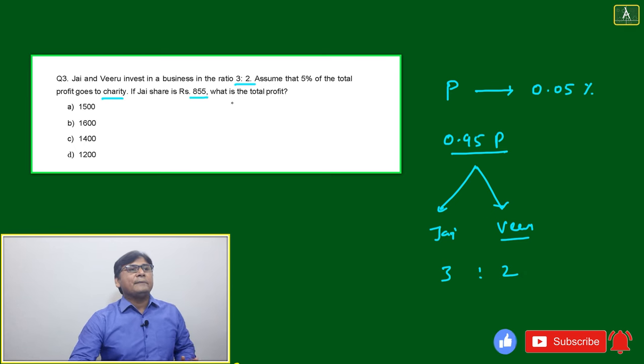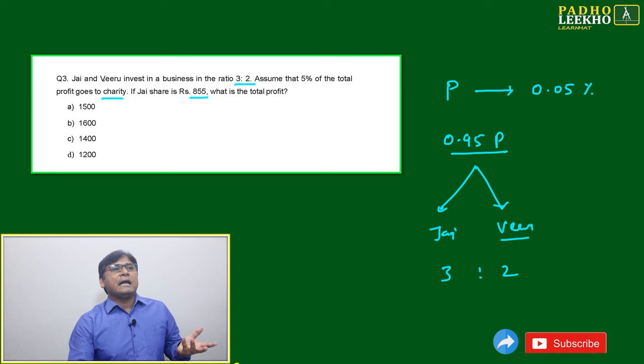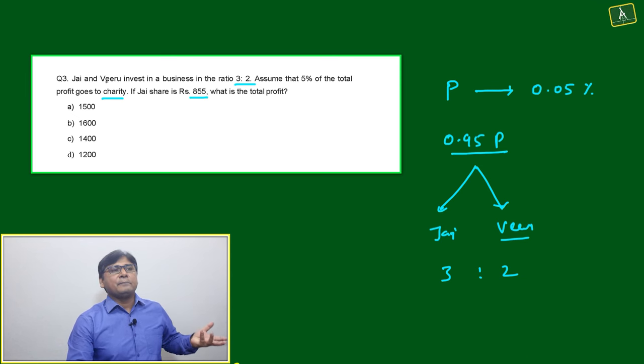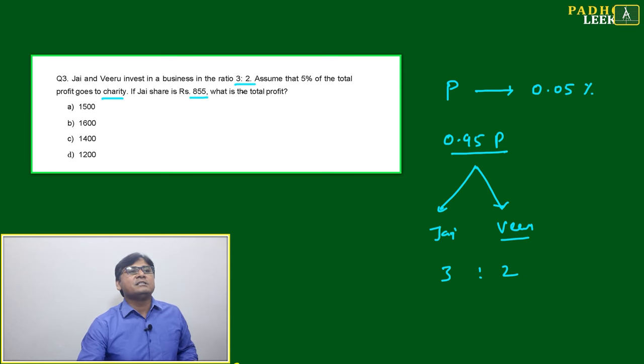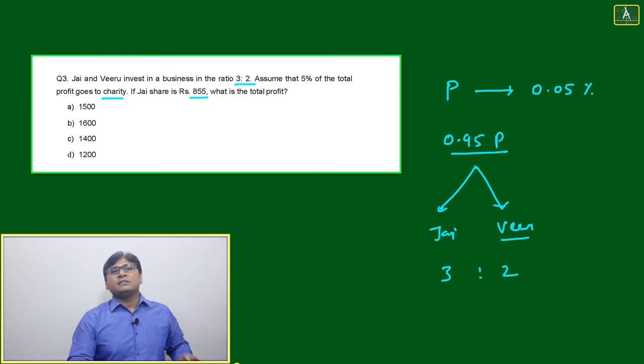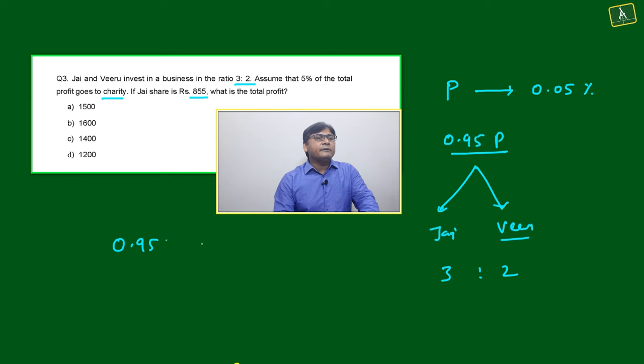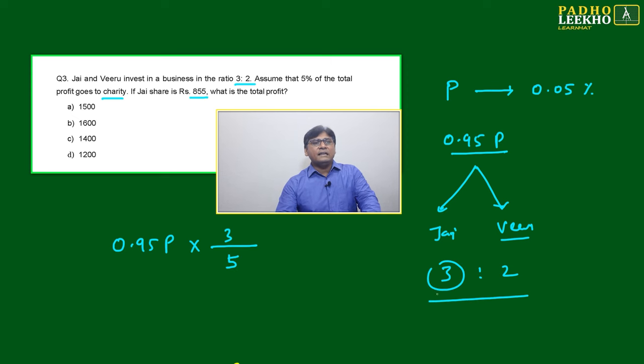They have invested in the ratio of 3:2, and time is the same. What we have to do is take 0.95 of the profit into Jay's share. What will be Jay's share? Jay's share will be 3 out of 5 of the total.